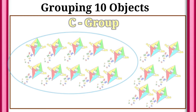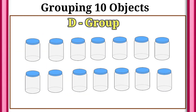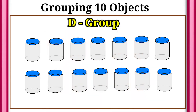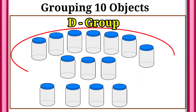Next, we have D group of objects. We have 14 objects, but let's circle 10 objects only.